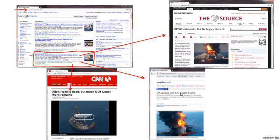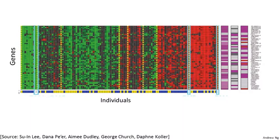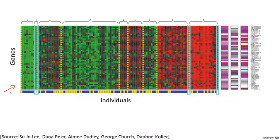Clustering algorithms and unsupervised learning algorithms are used in many other problems as well. Here's one on understanding genomics — an example of DNA microarray data. The idea is you have a group of different individuals and for each of them, you measure how much they do or do not have a certain gene. Technically, you measure how much certain genes are expressed. These colors — red, green, gray, and so on — show the degree to which different individuals do or do not have a specific gene. You can then run a clustering algorithm to group individuals into different categories.